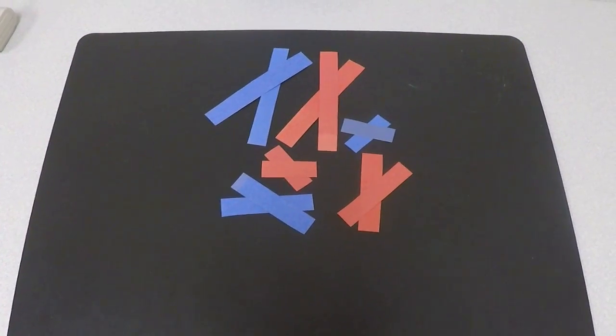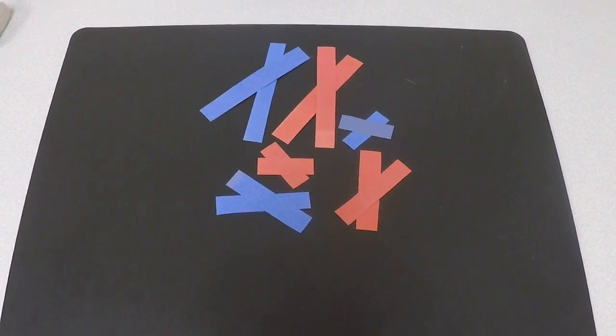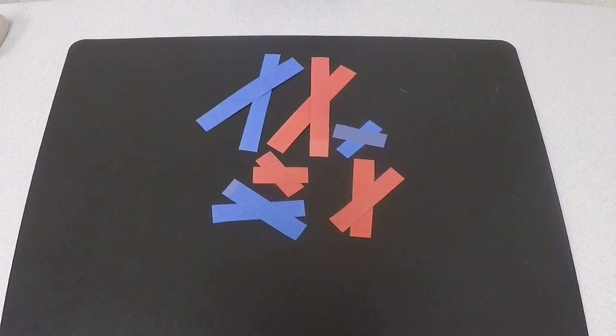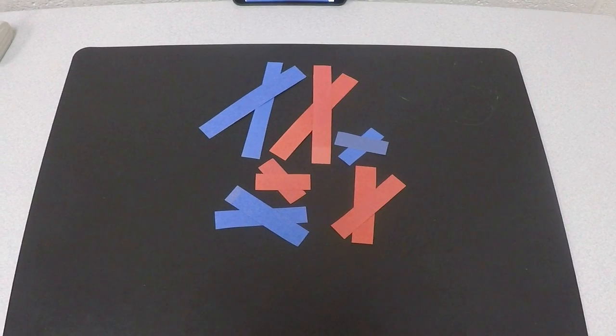Those copies will stay stuck together by something called a centromere and they form these little X shapes here. So each of those X's represents a chromosome and its identical copy connected by a centromere.